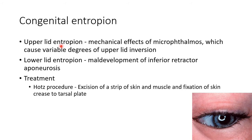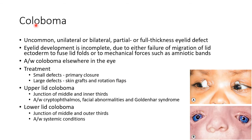Now let us discuss about congenital entropion. Congenital upper lid entropion occurs due to mechanical effects of microphthalmos, which causes variable degrees of upper lid inversion. Congenital lower lid entropion occurs due to maldevelopment of the inferior retractor aponeurosis. This picture shows congenital lower lid entropion. The treatment is by Hotz's procedure, in which we perform excision of a strip of skin and muscle and fixation of the skin crease to the tarsal plate.